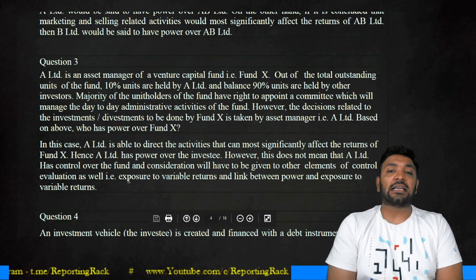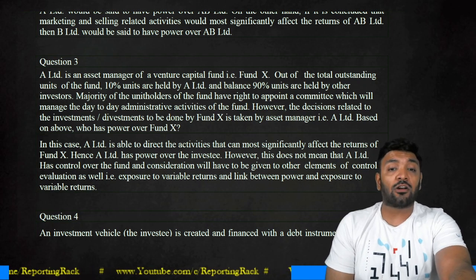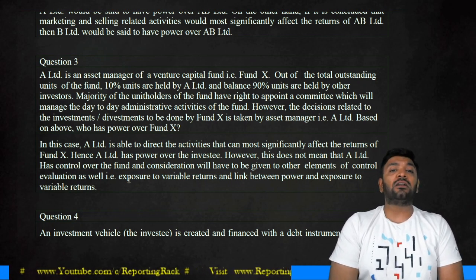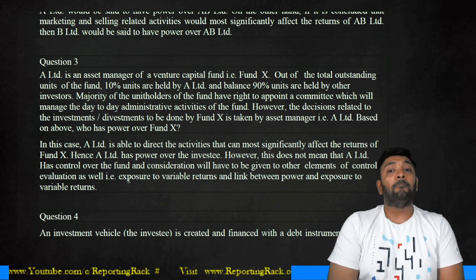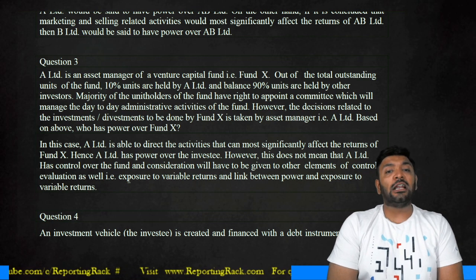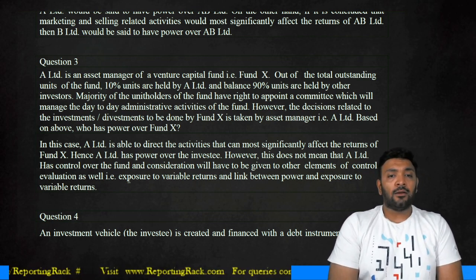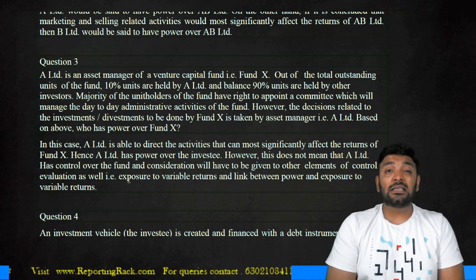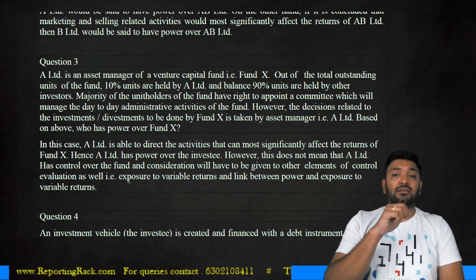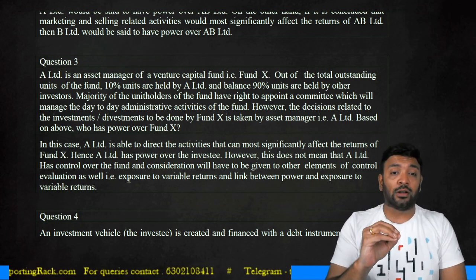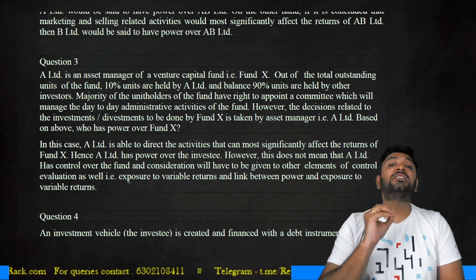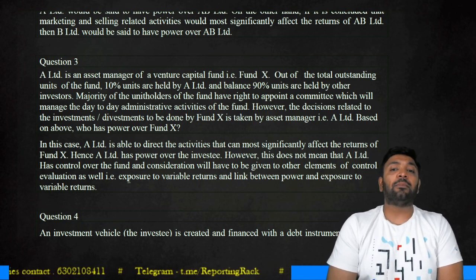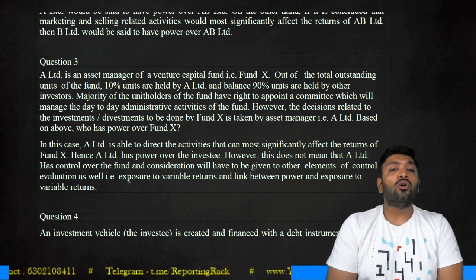Next: A is an asset manager of a venture capital fund. Out of the total outstanding units of the fund, 10% of the units are held by A Limited himself; the balance 90% are held by other investors. A majority of the unit holders have a right to appoint a committee which will manage the day-to-day administrative activities. In a venture fund, the main business activity is to invest and derive returns. The committee appointed by the majority unit holders is only for administration activities, while decisions relating to investment and disinvestment are taken by the fund manager, A Limited.